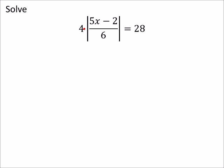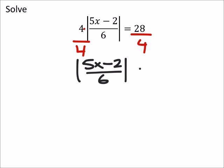We'll divide both sides by four first, and that gives us the absolute value of 5x minus 2 over 6 equals—that's a seven right there. So now we have the absolute value on its own side, all by itself, and that's what we wanted.